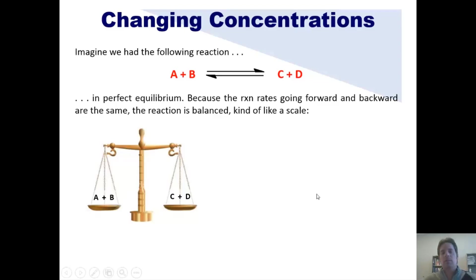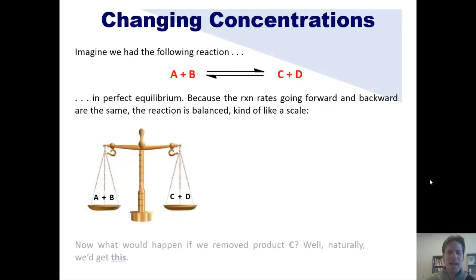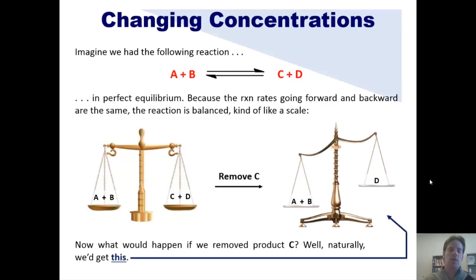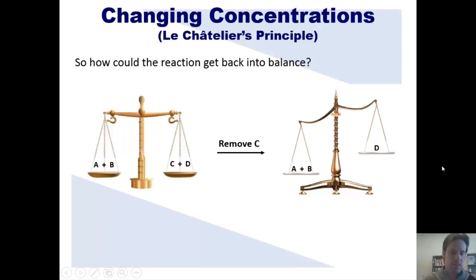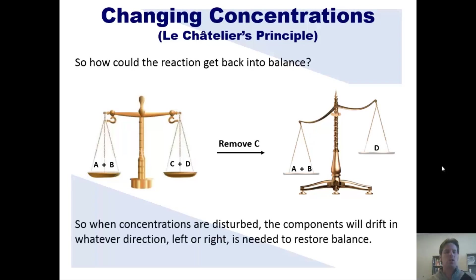I'm using the scale as a teaching tool to help visualize Le Chatelier's Principle. If we removed C, the scale would tip to the left. How would you get the reaction back into balance? By making more C — A and B could convert to form more C and D, decreasing the amounts of A and B until balance is restored. This is exactly what happens when concentrations are disturbed in an equilibrium setting. The components will drift in whichever direction — left or right — is needed to restore balance.